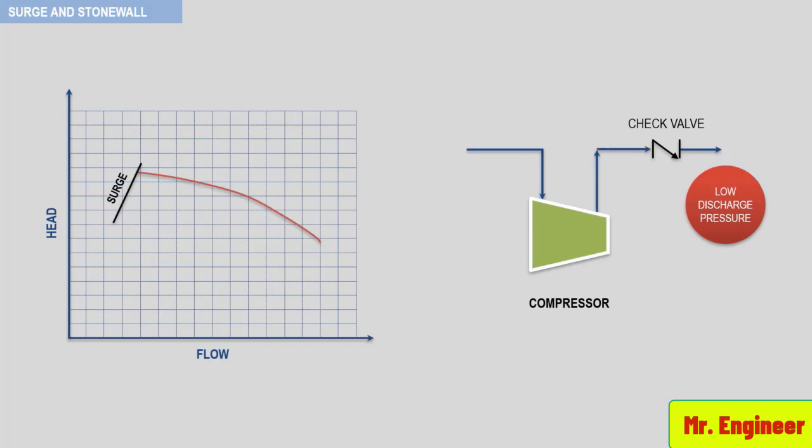The reversal of dynamic flow caused by flow separation in the compressor stage and the recovery of flow resulting from reduced discharge pressure is defined as a surge cycle.